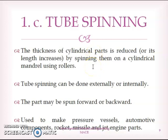Tube spinning is used to make pressure vessels, automotive components, rocket or missile parts, jet engine parts, etc. Tube spinning can be done externally or internally, and the part may be spun forward or backward.